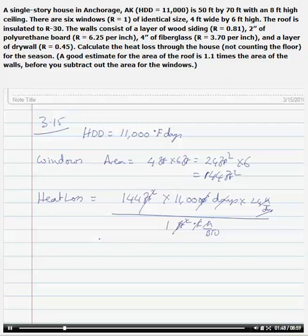So we would get this one to be approximately 38 million - 38,016,000 BTUs. This is per season or per year.